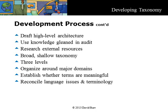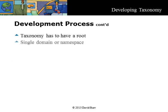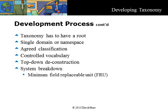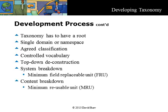Remember, a broad, shallow taxonomy will be more usable, require an order of magnitude less work to develop and maintain, and to apply. As you continue developing your taxonomy, remember that it has to have a root node and it should have a single domain or namespace. Everyone should agree on the classifications and vocabulary, although it is possible to have a fixed term at the data level and apply different labels for users to see in different systems. The process works best with a top-down deconstruction, either a system or content breakdown. In a system breakdown, you will typically stop at what is called the minimum field replaceable unit. In a content breakdown, you will typically stop at what is called the minimum reusable unit, which based on experience is most likely a stand-alone topic.